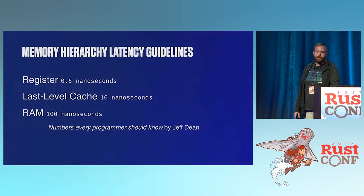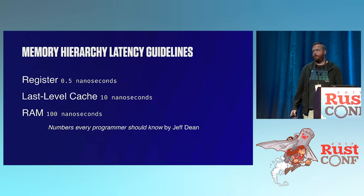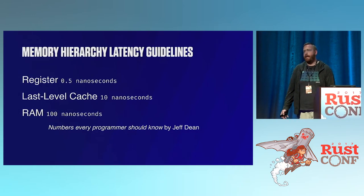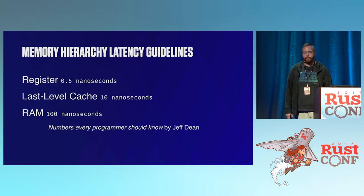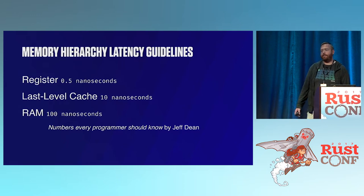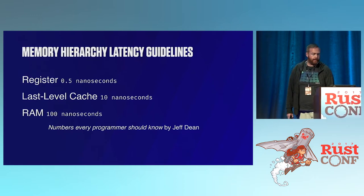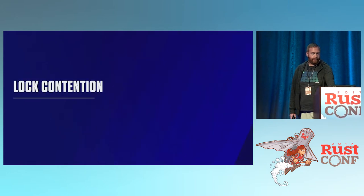When we talk about memory stalls, we're really talking about the memory hierarchy. These numbers are here to give you a sense of the order-of-magnitude changes as you move up levels when talking to memory. A register takes about half a nanosecond. Your last-level cache is going to be around 10 nanoseconds — inside a CPU you've got an L1, L2, and sometimes L3 cache, each layer larger and slower. Talking to DRAM is going to be about 100 nanoseconds.